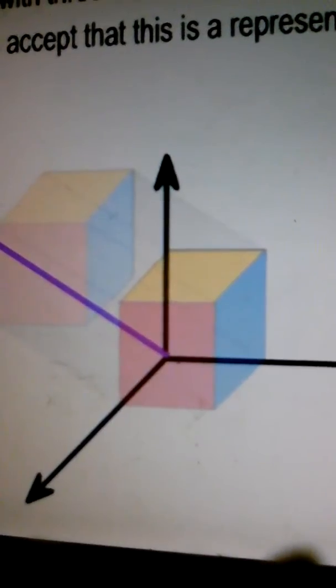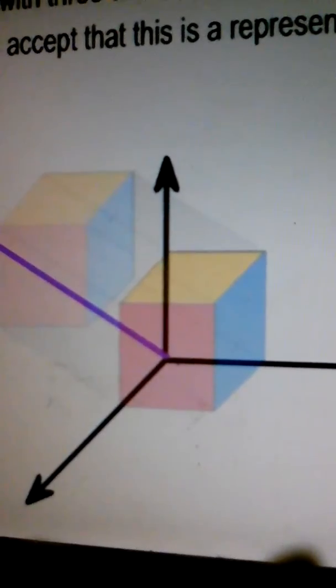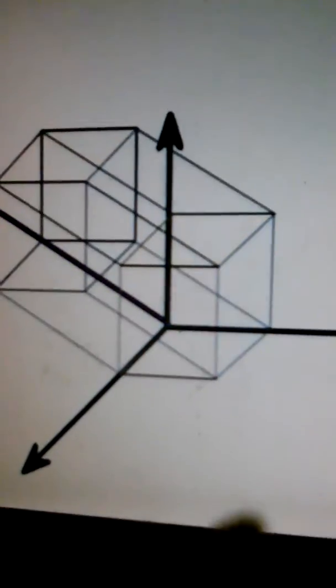Yet as with three dimensions on a two-dimensional monitor, we can accept that this is a representation of four dimensions. If you remove any one of the four axes, you will go back to three axes, each of which is 90 degrees to the other two.